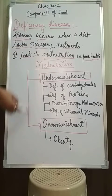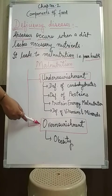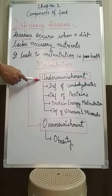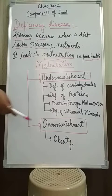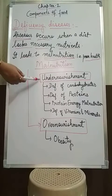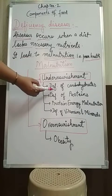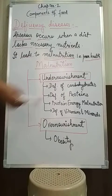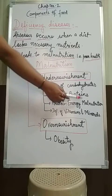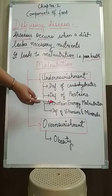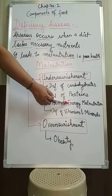Malnutrition is of two types: it is caused either by under-nourishment or over-nourishment. Under-nourishment involves deficiencies of nutrients, and over-nourishment means excessive food intake. Under-nourishment can be caused because of deficiency of carbohydrates, proteins, protein-energy malnutrition (PEM), or deficiency of vitamins and minerals. Protein-energy malnutrition refers to deficiency of proteins, carbohydrates, and fats — the energy-giving foods.